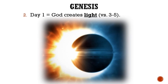Secondly, God creates light on the first day. God sees that the light is good and calls the light day, and the darkness he calls night. Technically, darkness is created first and then light. That is why Jews begin their day at sundown, because what came first was the evening and then the morning.